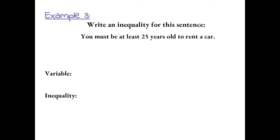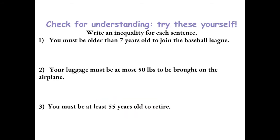So again, we're talking about age. For my variable, I'm going to use A for age. So for the inequality, A is age. A must be at least 25 years old. So that means I could be 25 or older to rent a car. We show this as A greater than or equal to 25. Try these yourself to check for understanding.